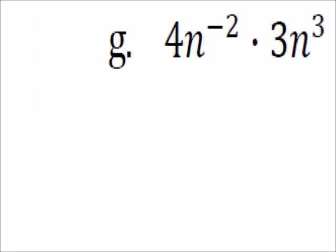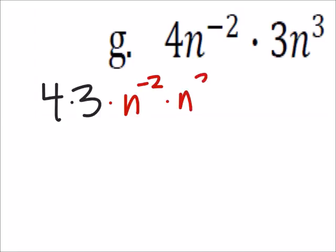On g, for this one, we can just apply the old-fashioned product rule right here, where we're going to multiply the two same bases. So rearranging this, I've got 4 times 3, but then I'm going to multiply it by n to the power of negative 2 and n to the power of 3.